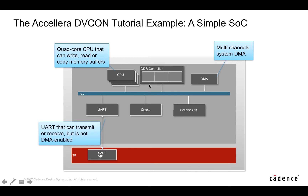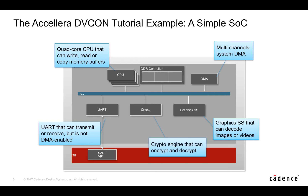The DMA can copy information from one memory location to another, and it'll also serve a UART device that will transmit or receive information. We also have a graphic subsystem that can decode images or videos, and we have a crypto engine that can do encrypt and decrypt. This is our DUT, and we're going to evaluate and demonstrate how to approach such an environment with PSS.